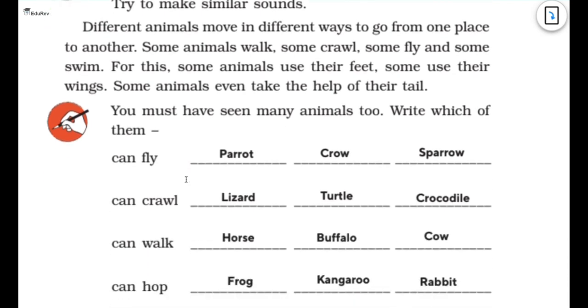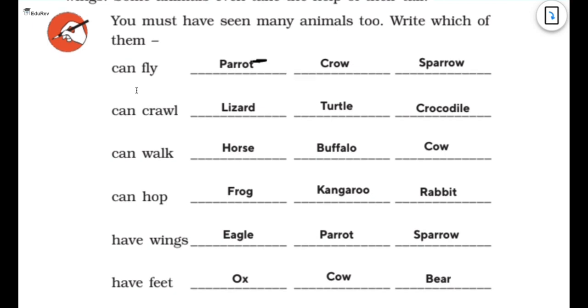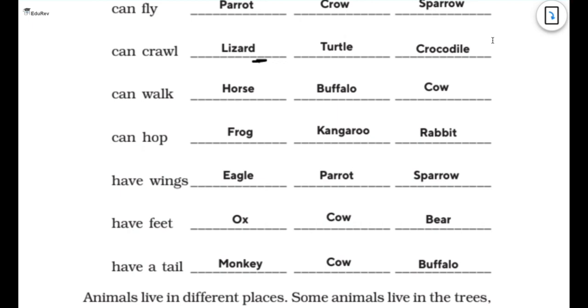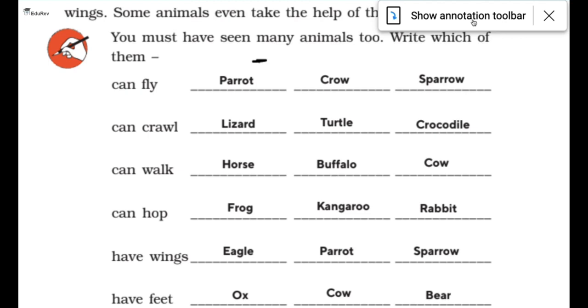Different animals move in different ways to go from one place to another. Some animals walk, some crawl, some fly and some swim. For this, some animals use their feet, some use their wings, some animals even take the help of their tail. You must have seen many animals too. Write which of them can fly, crawl, walk, hop, wing, feet and have a tail. So let's write it down. I've written a few for you.